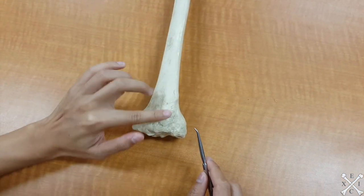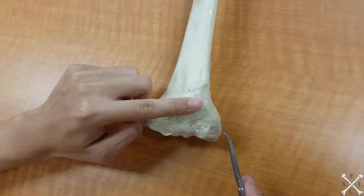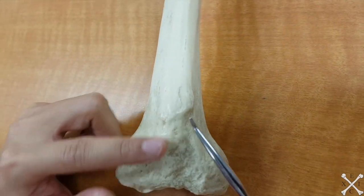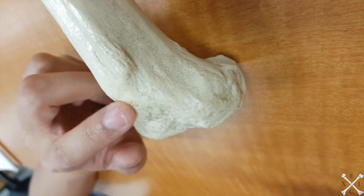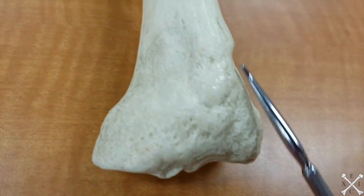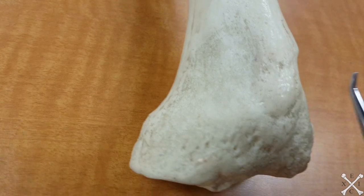The tibial tuberosity would be this huge bump that you feel right here. And this is actually the place where if ever you fall on your knees and you feel that pain, that's exactly why athletes need to wear knee pads. It's to protect this area right here.